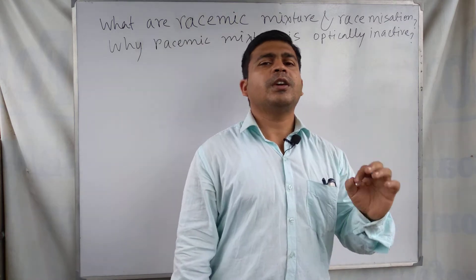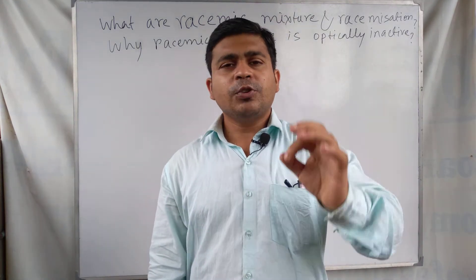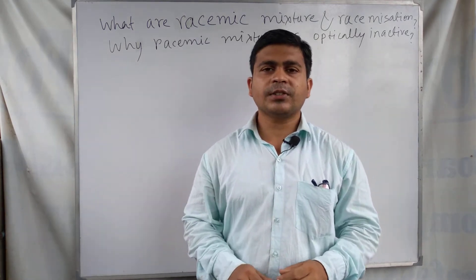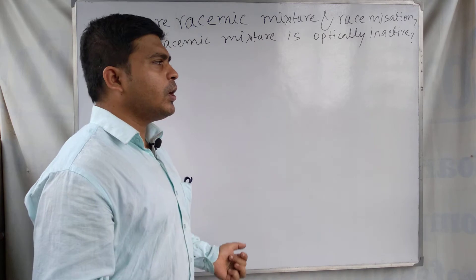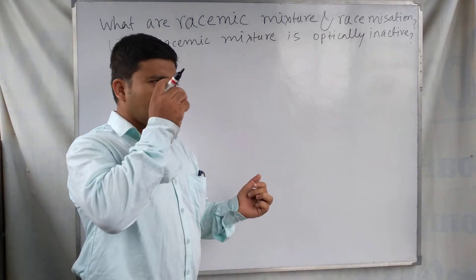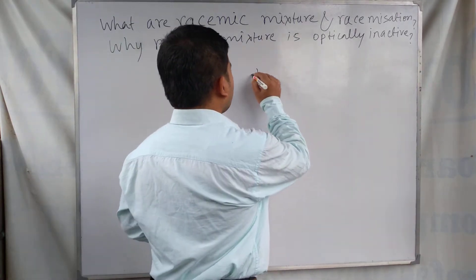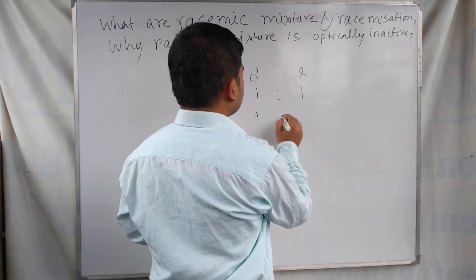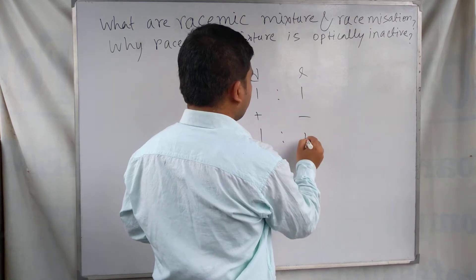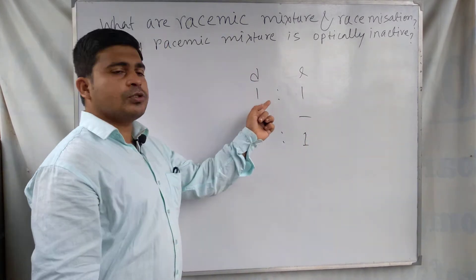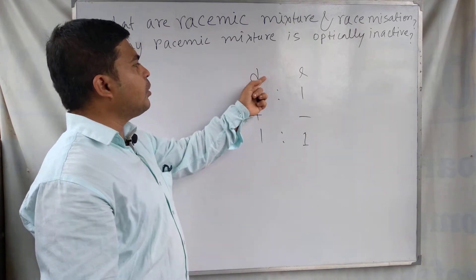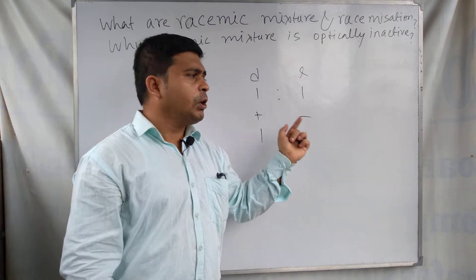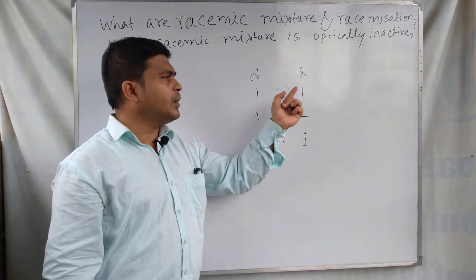A racemic mixture is an equimolar mixture of two enantiomers — the plus enantiomer and minus enantiomer — or you can say the D and L forms in a 1:1 ratio. D stands for dextrorotatory and L stands for levorotatory; these two are determined experimentally and cannot be determined physically.